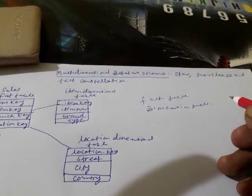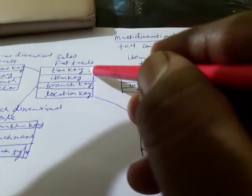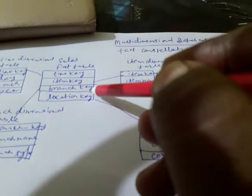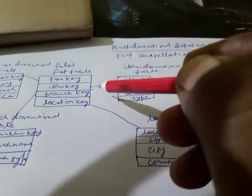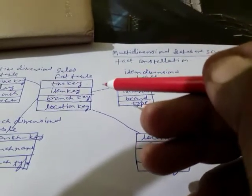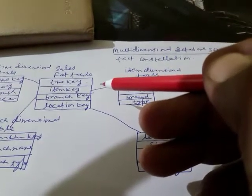A fact table is a combination of your data without redundancy. For example, in a sales table, we can have: time — when the sale was done; what different items were produced in the sales; the branch key — where the sale occurred; and the location of the branch. These attributes are all related to each other, and there is no redundancy because item keys differ, time keys differ, branch and location also differ.